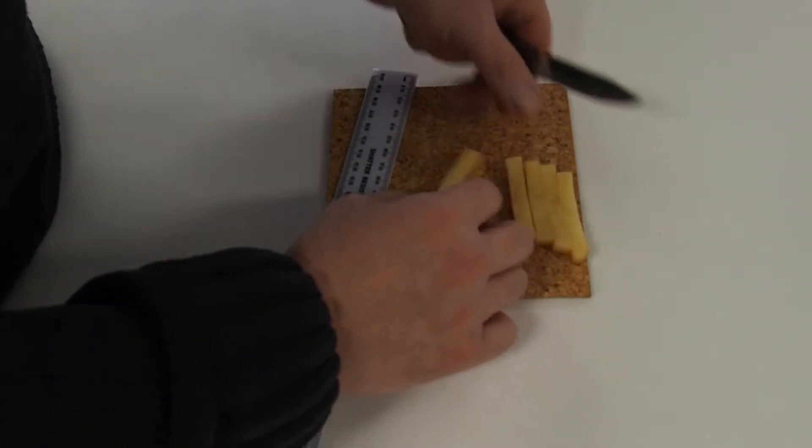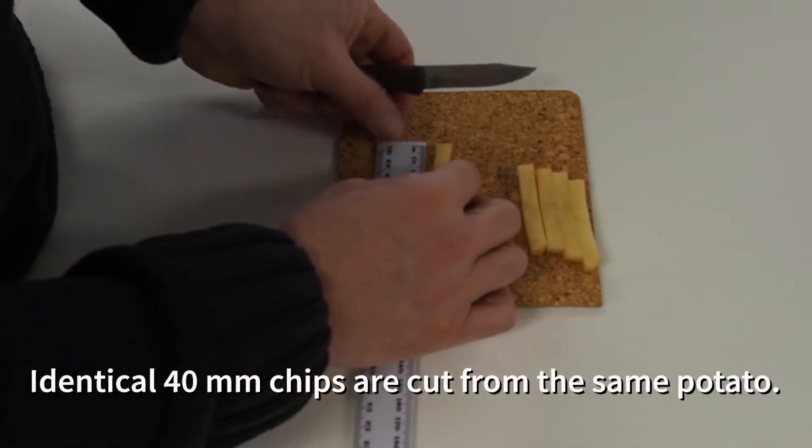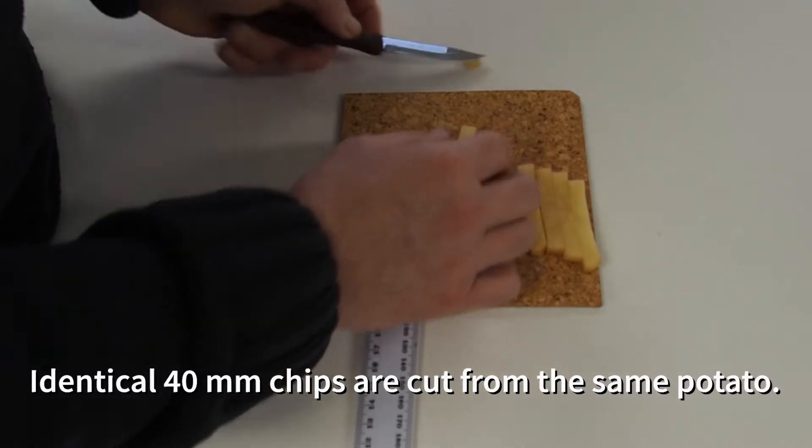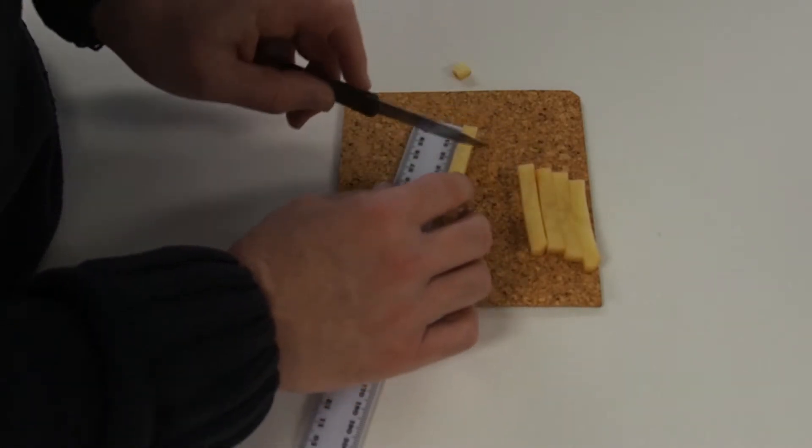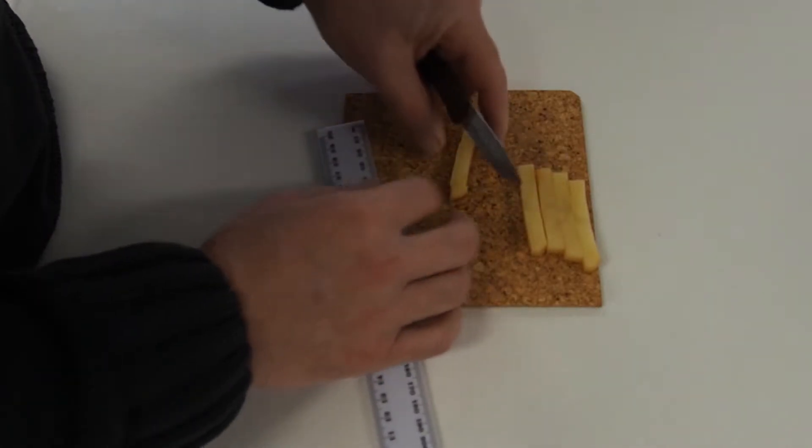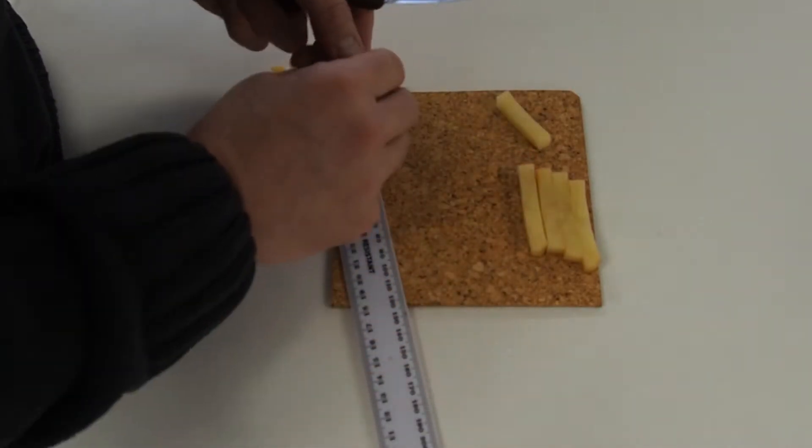These chips have all been taken from the same potato and they're going to be cut to exactly 40 millimeters in length, making sure to remove any skin on the ends and trying to keep them as uniform as possible.